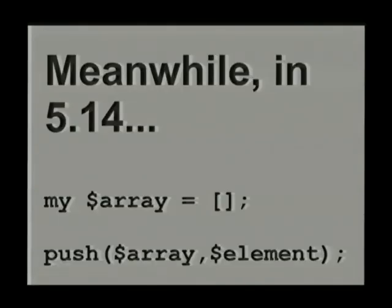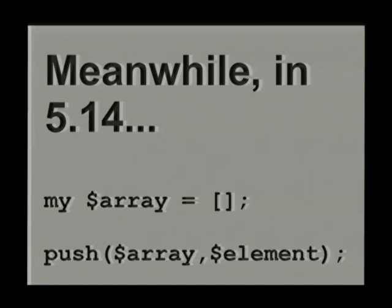If you're using Moose, there is Moose::Autobox, which does the same thing as autobox::Core but uses Moose classes instead. Meanwhile in 5.14 — I should have mentioned this talk was advertised as what's new in Perl 5.14, but it's really what's new in Perl in general, which includes some stuff in 5.14 — you can now push directly onto an array reference. I've kind of wanted that for a decade, and we finally have it now.